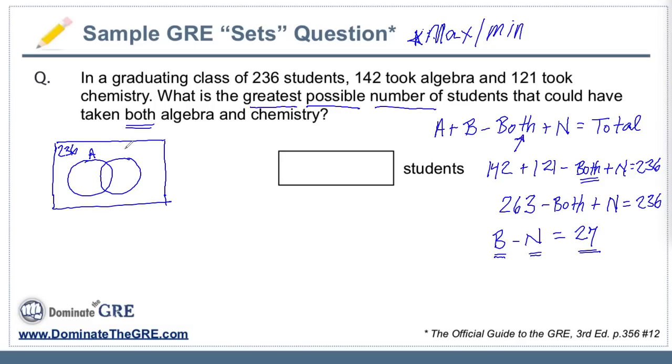We have this group of algebra at 142, except some might be in the overlapping section. We know that 121 take chemistry, and some of those might also be in this overlapping section. There might be this group who are neither, outside of algebra and chemistry. I'm going to draw three different scenarios to help illustrate how this problem works. It's about going to the extremes.